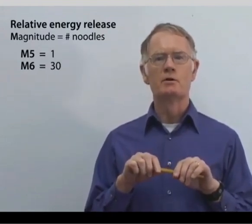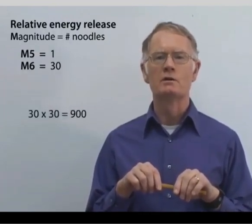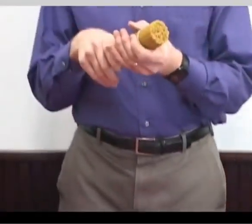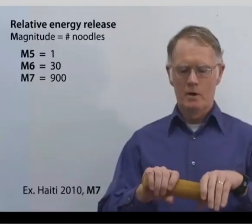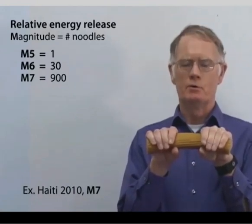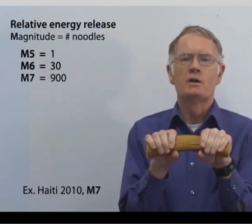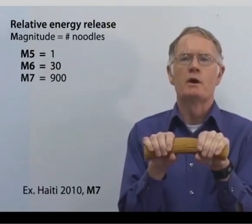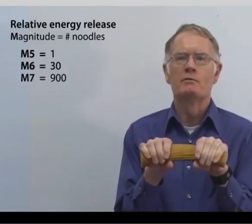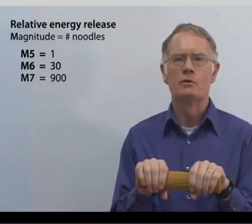To go then to a magnitude 7 earthquake, such as the Haiti earthquake of January 2010, I'd have to take the 30 and multiply by another 30, so get a bundle of 900 strands of spaghetti. When I get to a bundle of 900 strands, I really have to bend it fairly hard, I have to put quite a bit of force on it. It gives us a good sort of physical feeling for the comparison of the amount of energy released in a magnitude 7 earthquake compared to the single strand which is a magnitude 5 earthquake.